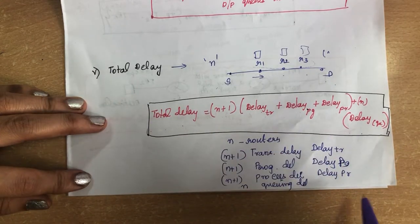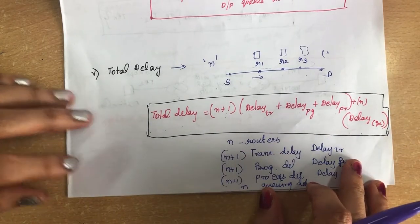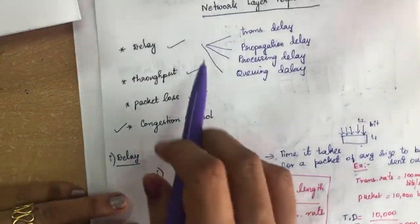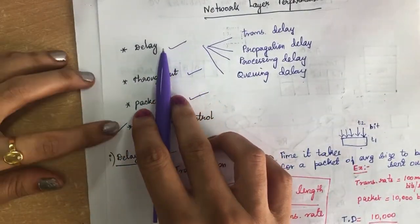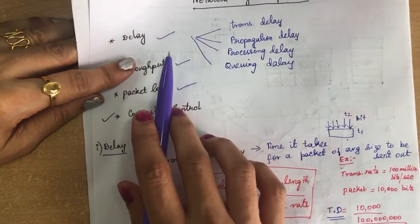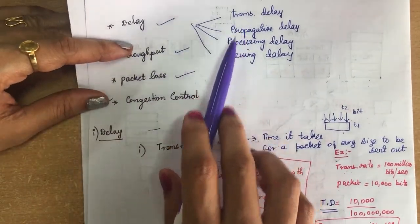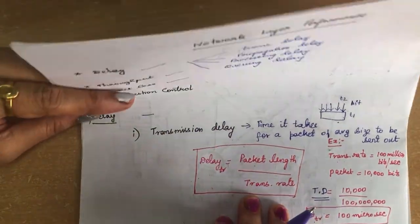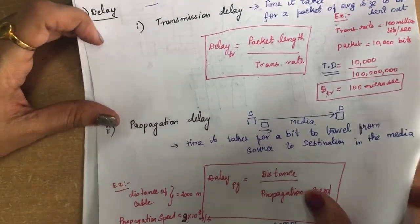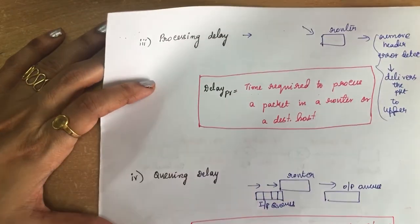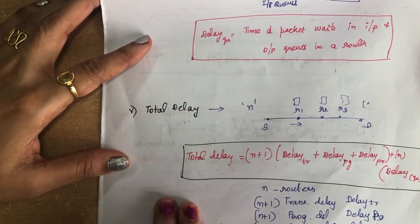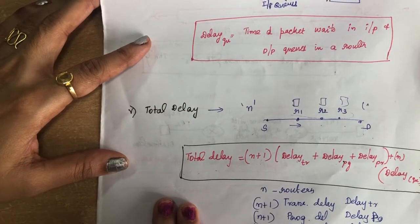In summary, every packet sent from source to destination will encounter delay. There are four types: transmission delay, propagation delay, processing delay, and queuing delay. We have also found out how to calculate the total delay of the network.